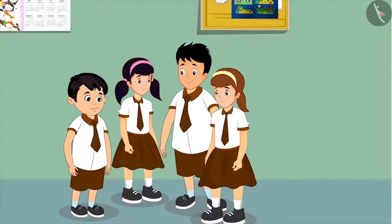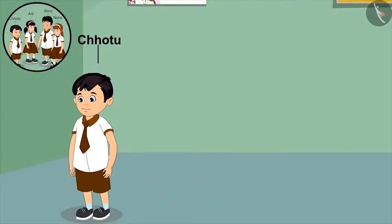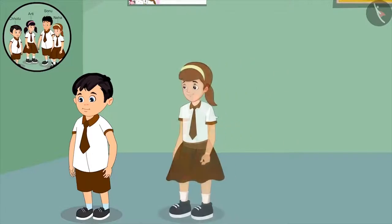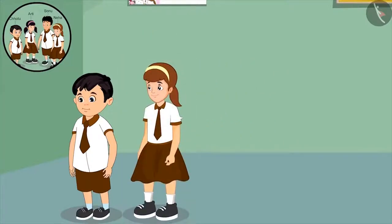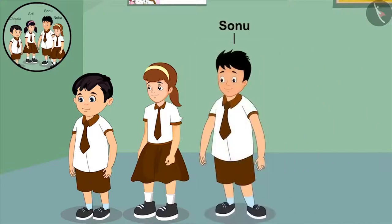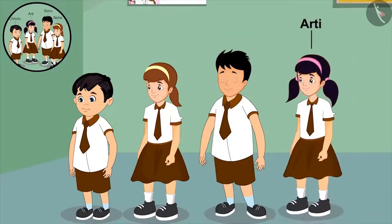First of all, being the shortest among all four children, Chotu stands in front. Neha, who is taller than him but shorter than the rest, stands behind him. Sonu stands behind Neha. Then finally, Aarti stands behind Sonu.